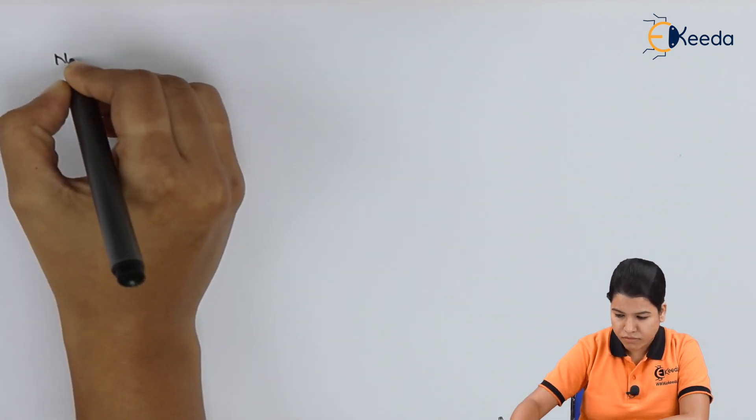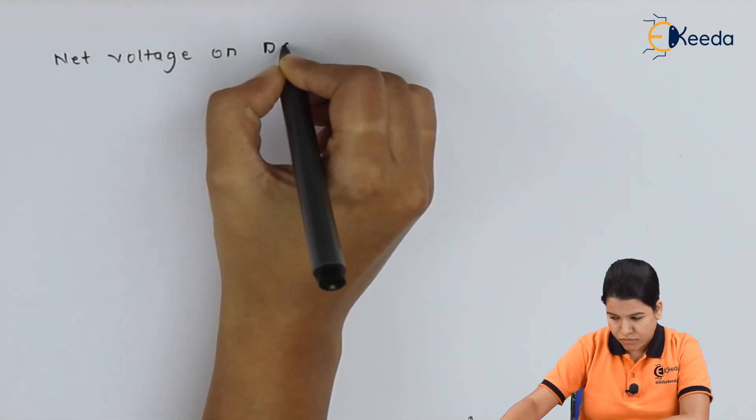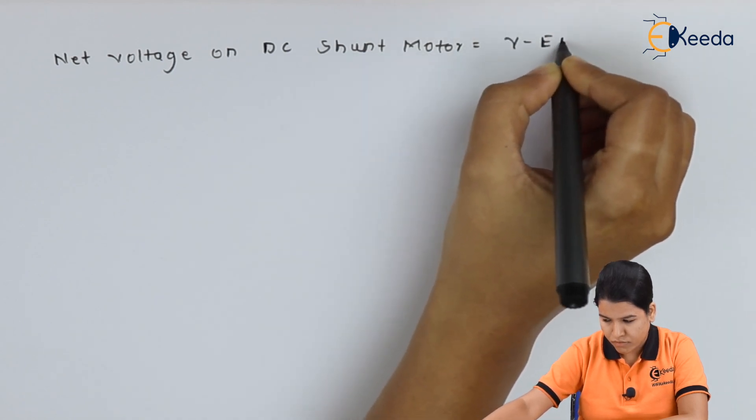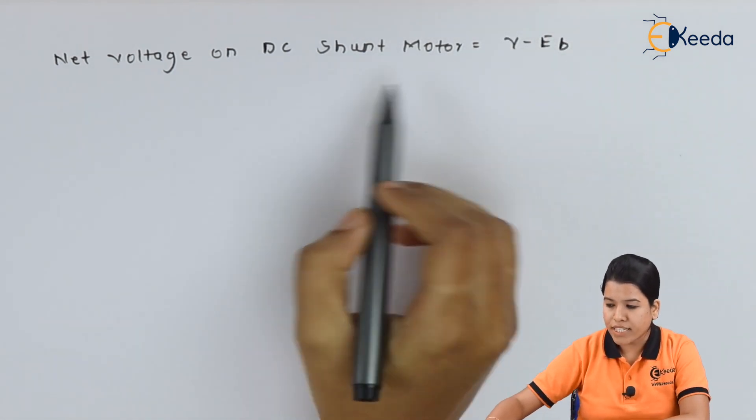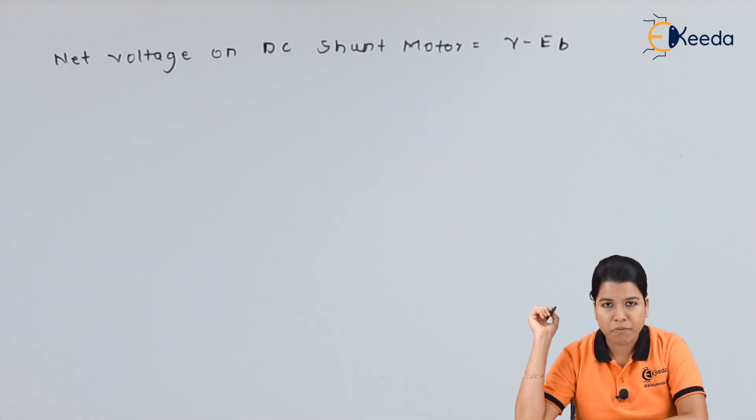Therefore the net voltage acting on the DC shunt motor can be given by: Net voltage is given by V minus Eb. Now we know that as per Ohm's law we can write the equation as: